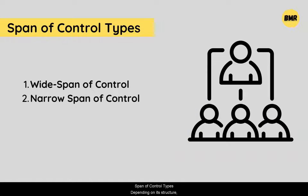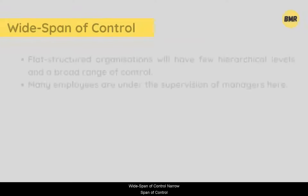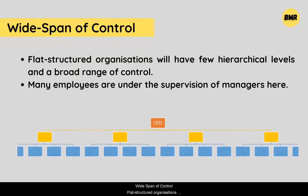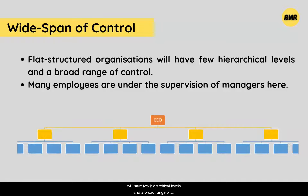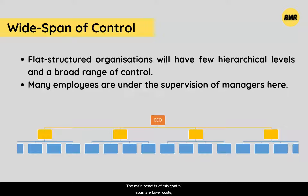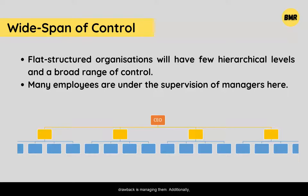Span of control types — we will discuss two types: wide span of control and narrow span of control. Wide span of control: flat structured organizations will have few hierarchical levels and a broad range of control. Many employees are under the supervision of managers here. Since there are fewer levels of hierarchy, it is less expensive and more adaptable to change. The main benefits of this control span are lower cost, faster planning, and well-trained subordinates. The primary drawback is managing a large number of employees, which can occasionally be confusing and challenging for management.